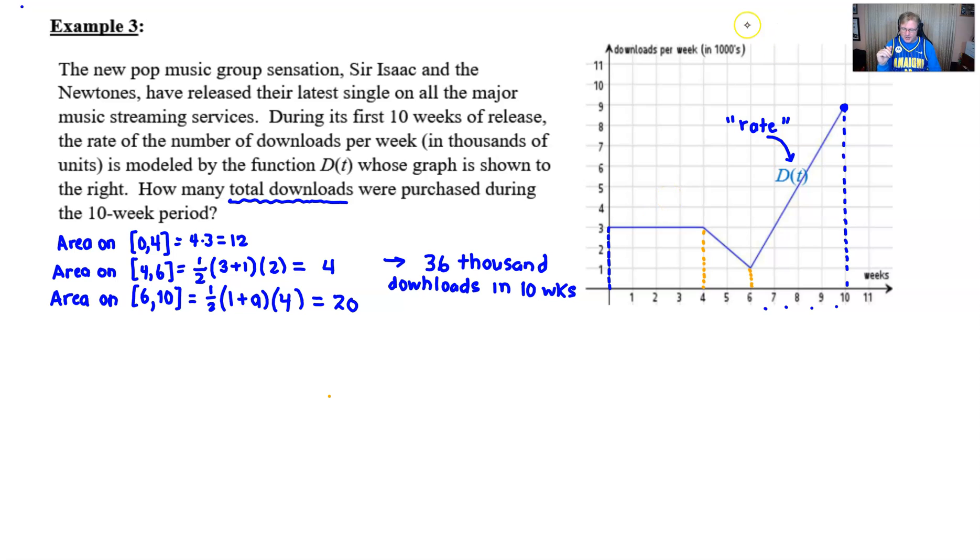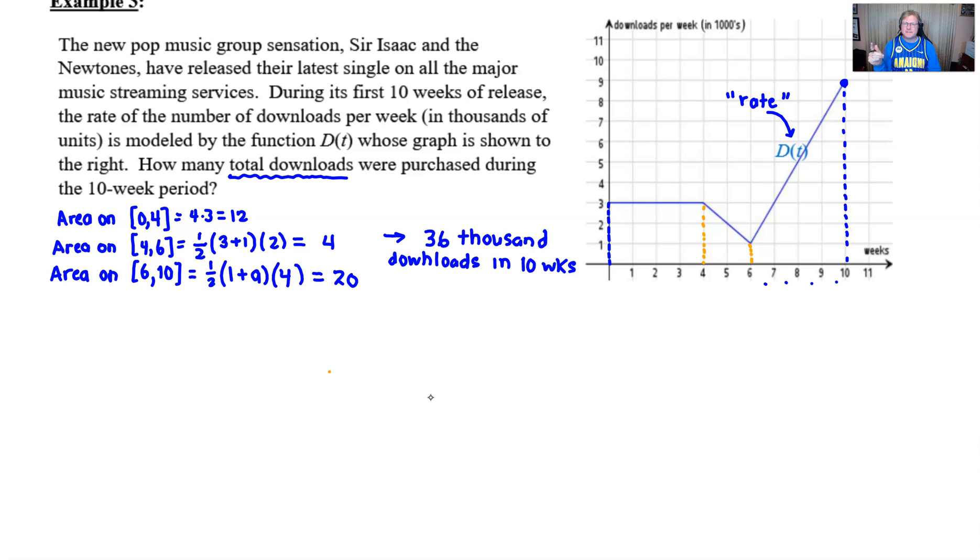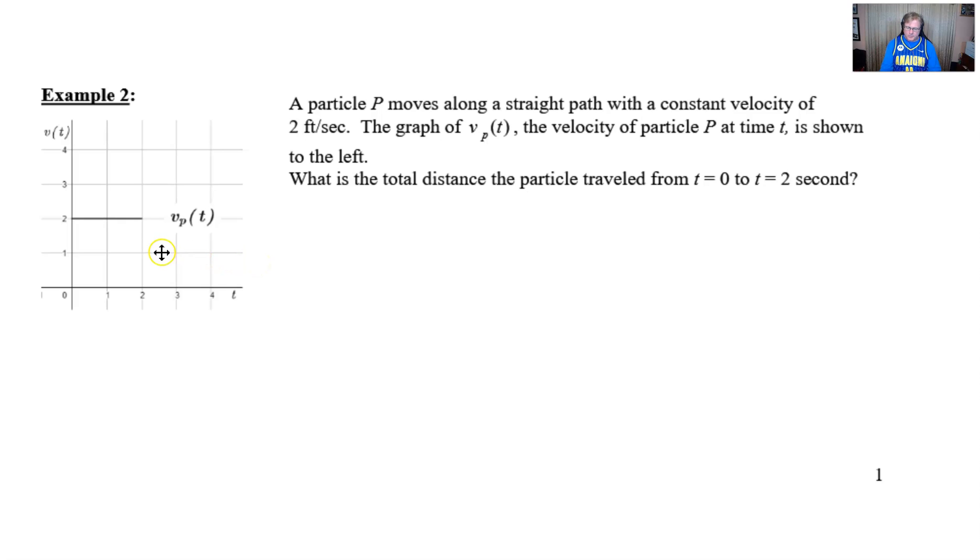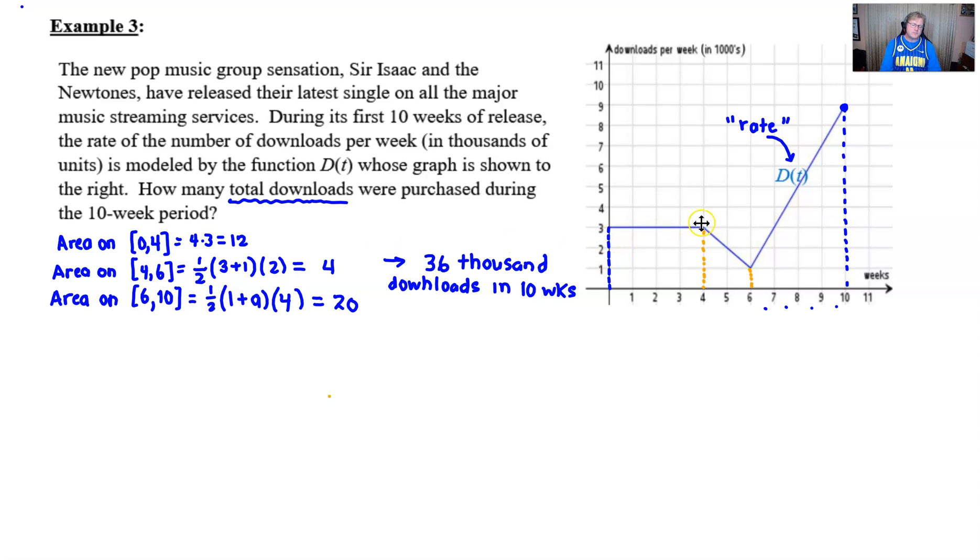Now I want to finish off this video lesson by maybe revisiting our example two. If you kind of go back, I'm going to take a page back here and look at this example two that I did in a previous video where we had this particle P that moved in this straight line with this constant velocity. We talked about how you can find the total distance traveled by, again, taking the area, finding the area of this region below that curve. And geometry worked really well. In fact, it didn't hurt us too bad in the Sir Isaac and the Newtones problem because we had this wonderfully shaped graph that was very conducive to finding the area using some known geometric formulas.